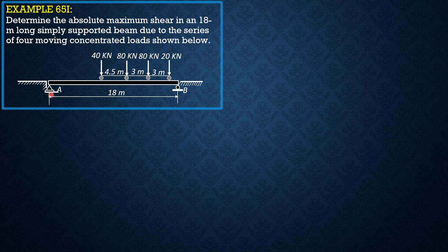The absolute maximum shear is either the reaction at A or the reaction at B. So let's consider first reaction at A. Let's assume that the four concentrated loads move from right to left, so we move the loads past A so that this first 80 kilonewton load will be up to A.